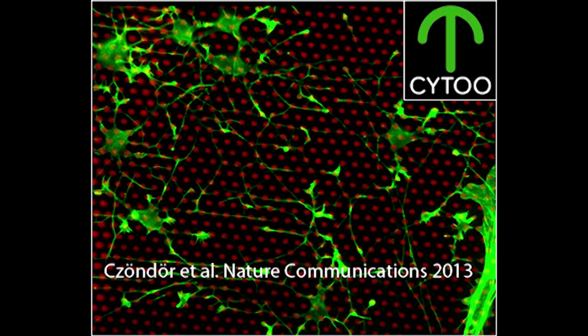We cultured primary neurons on micropattern substrates coated with N-cadherin. Those substrates were obtained from companies specializing in this technology. Micropattern substrates promoted axonal growth as shown on this image where N-cadherin microdots are in red and F-actin is labeled in green.